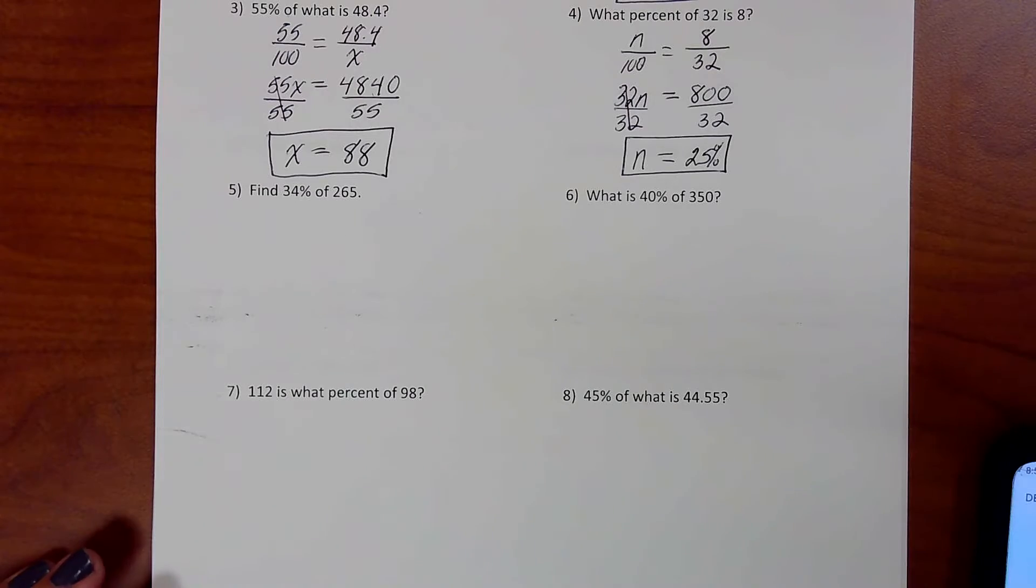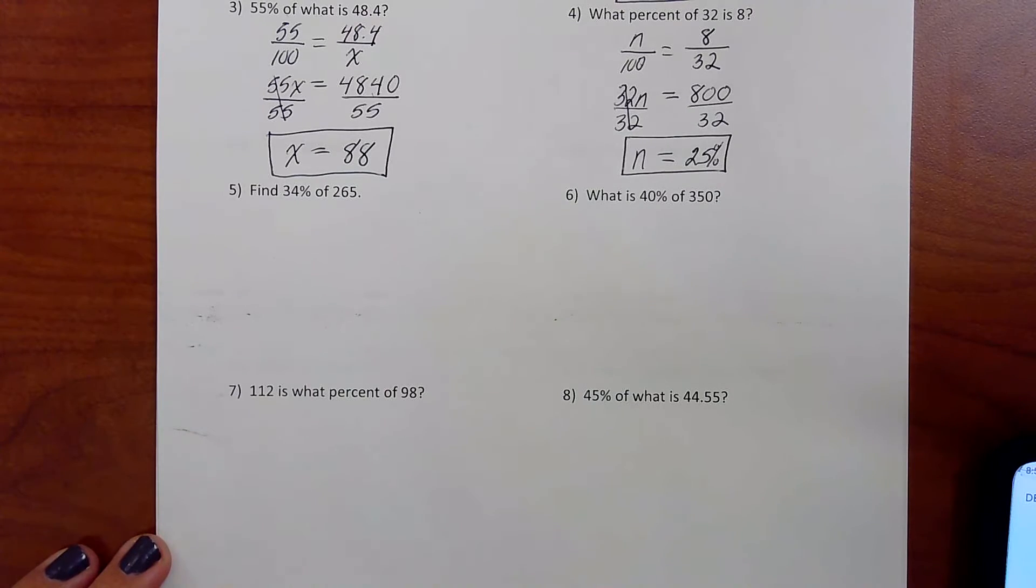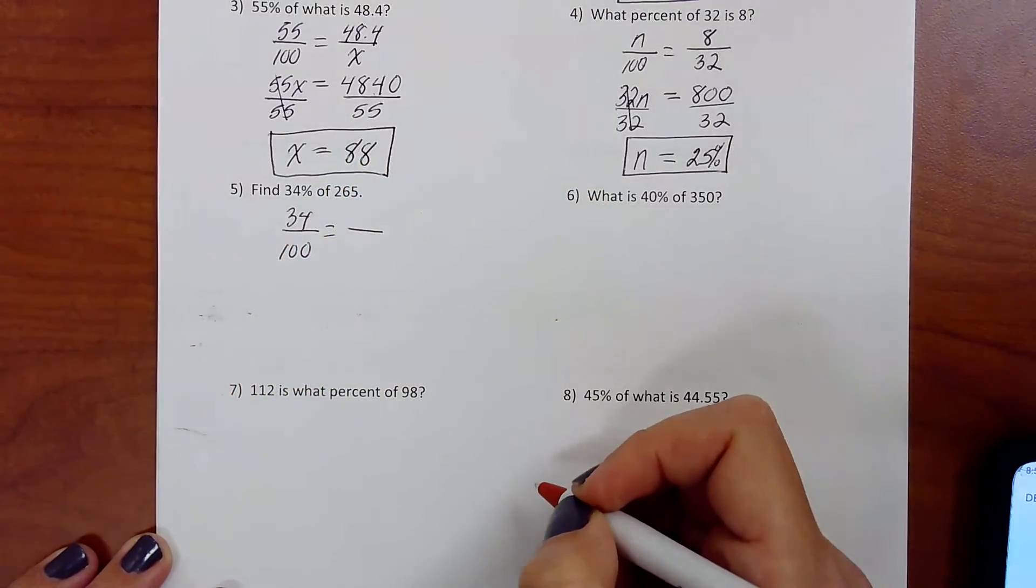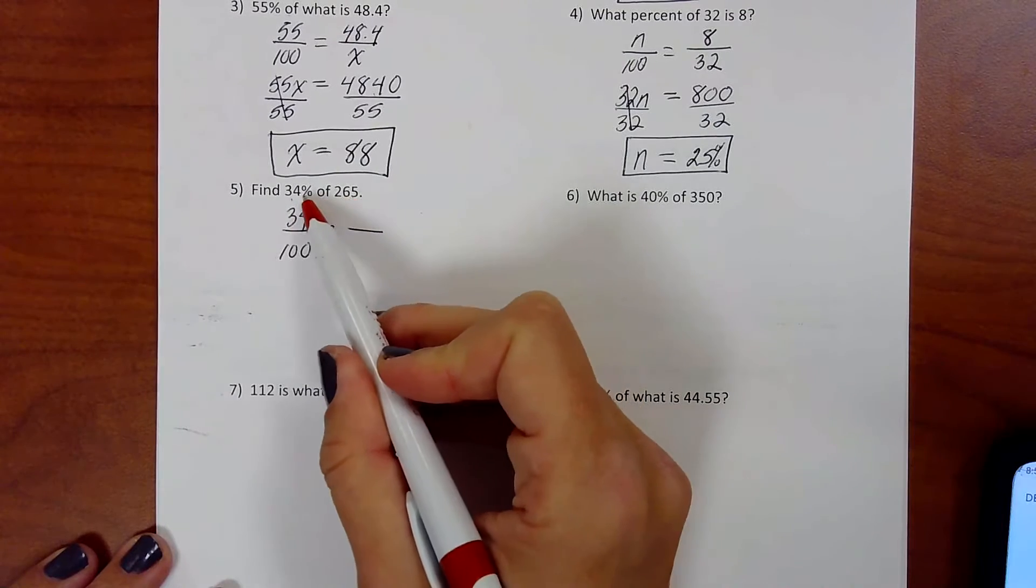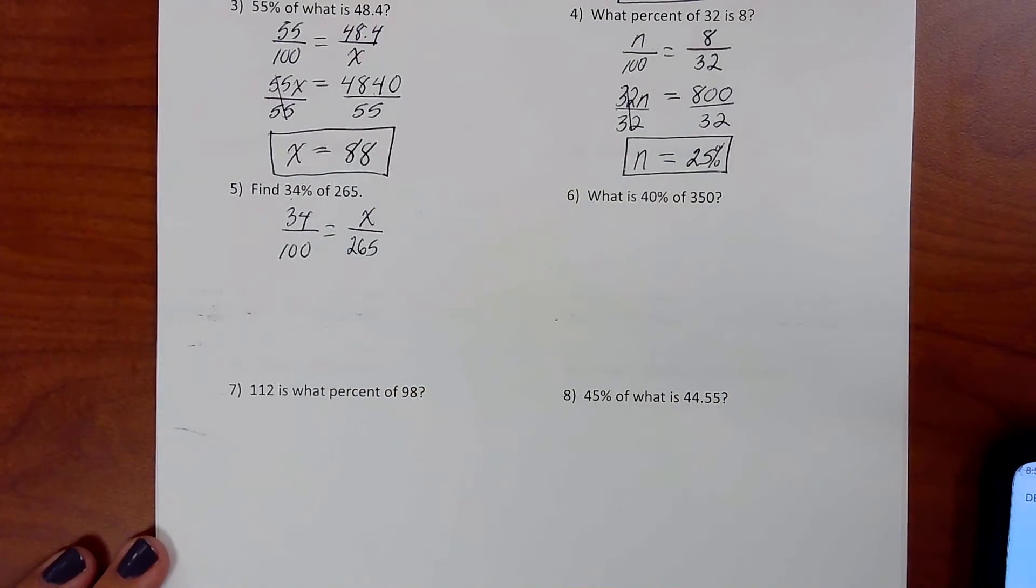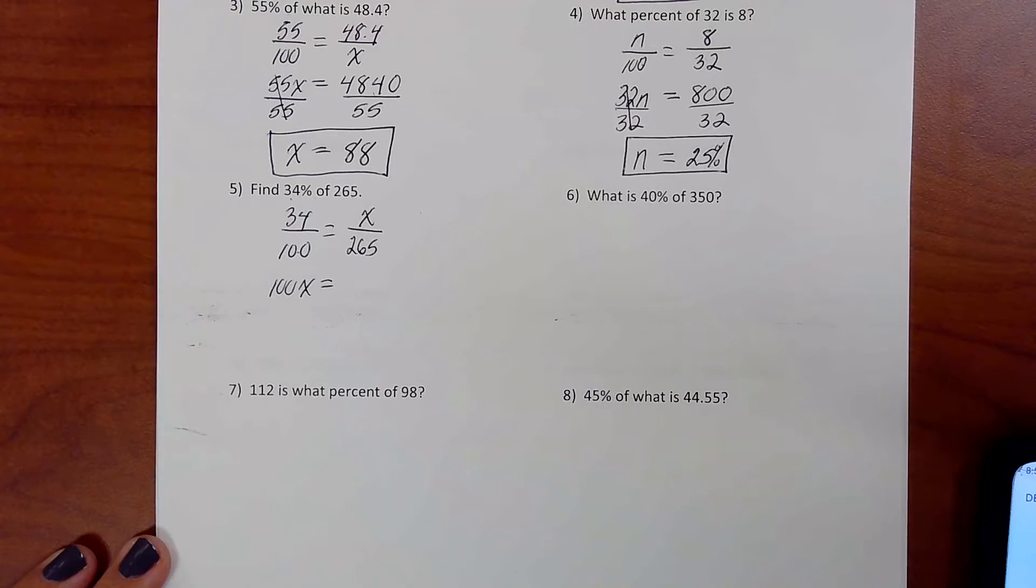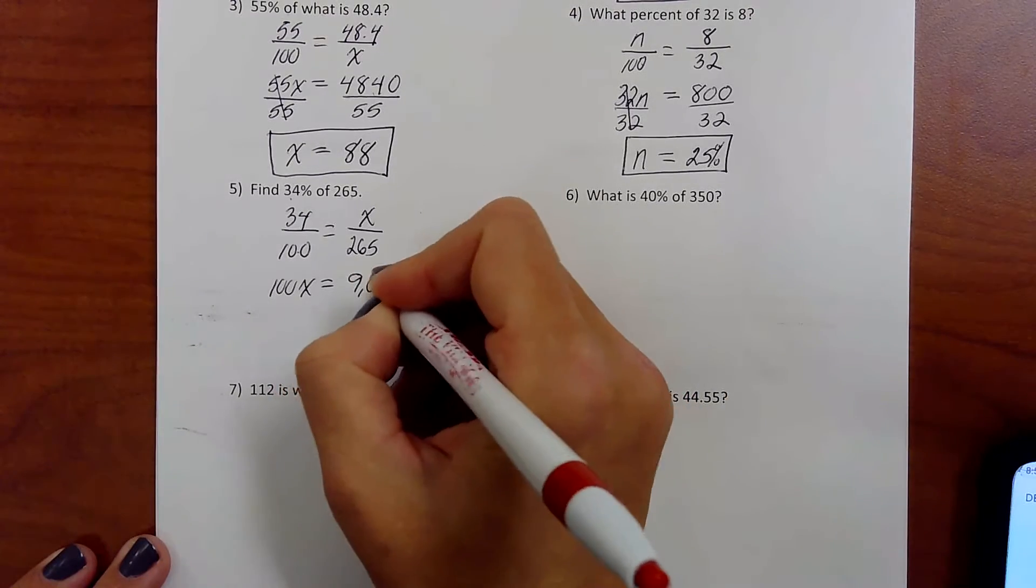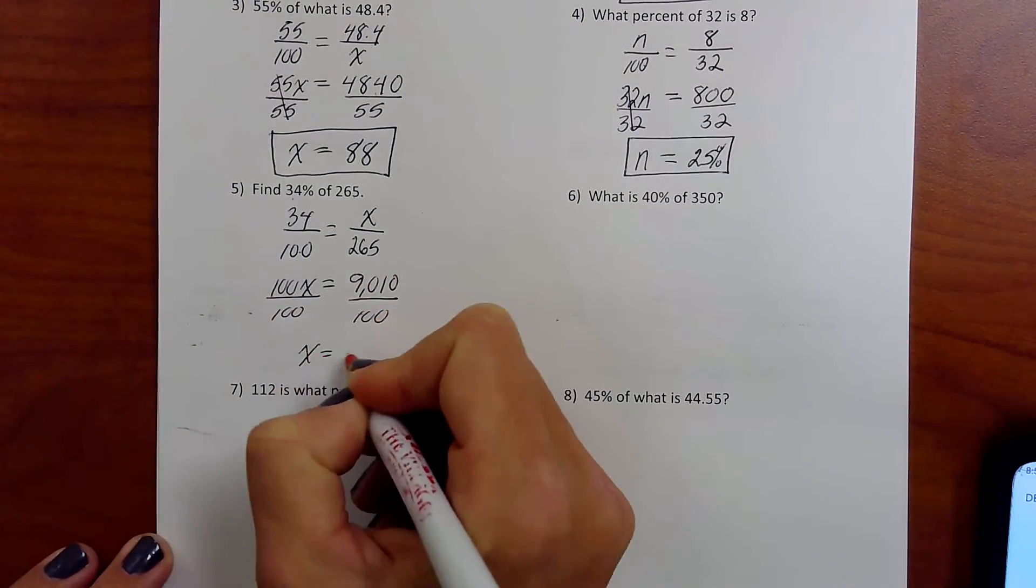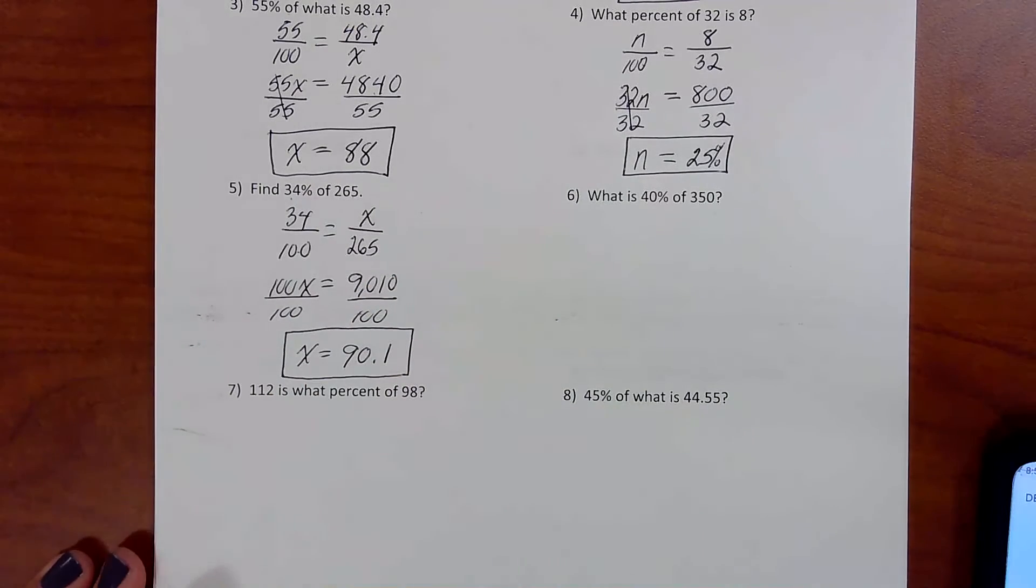All right. Five. Find 34% of 265. Proportion. 34 over 100. 34% of 265. It's always the percent of the total. So 265 is down here. Boom. 100 times x is 100x. 34 times 265 is 9,010. Divide by 100 this time. I'm going to get 90.1. Does it say to round? No, it doesn't. So I'm going to leave it as 90.1.